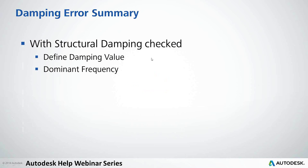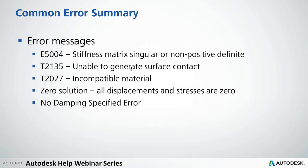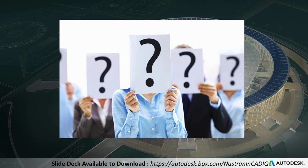These are the five error messages covered: singular matrix (5004), unable to generate surface contact (T2135), singularity detected (5000), incompatible material (T2027) and its partner unreasonable material properties (T2061), things that might cause zero solutions, and the no-damping-specified error. Now we'll open it up to questions.